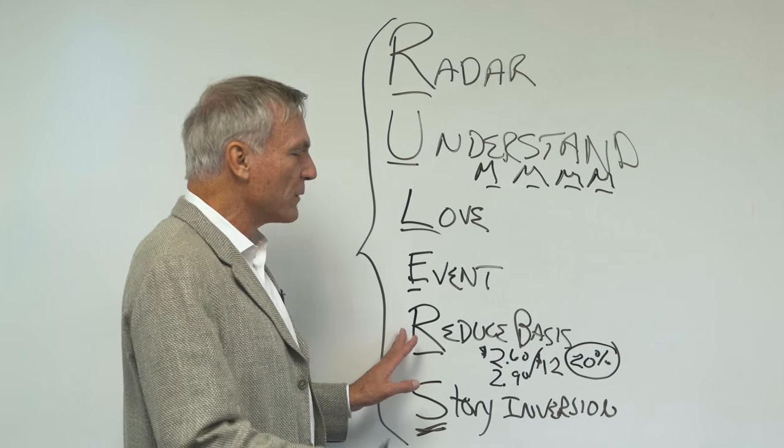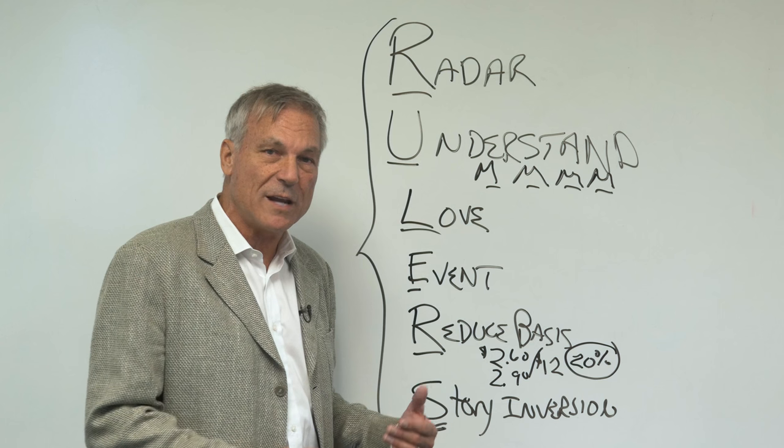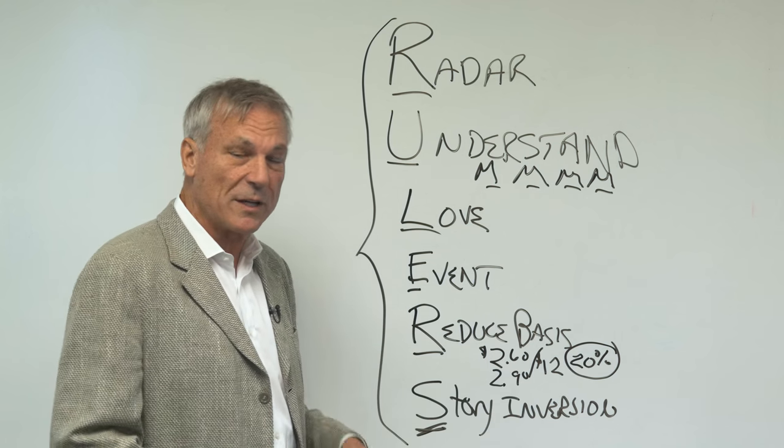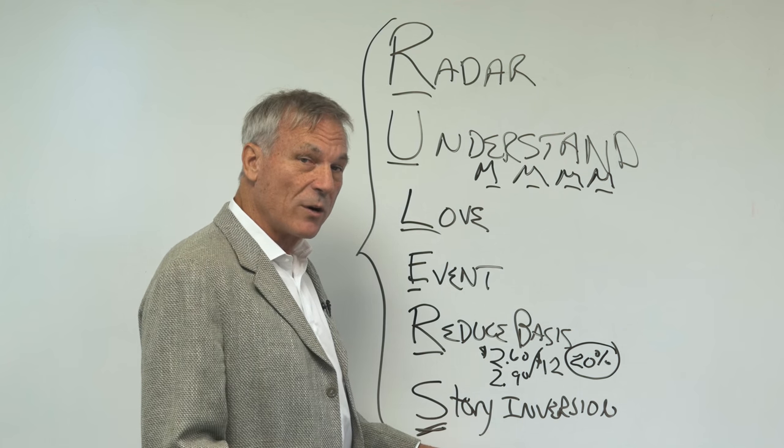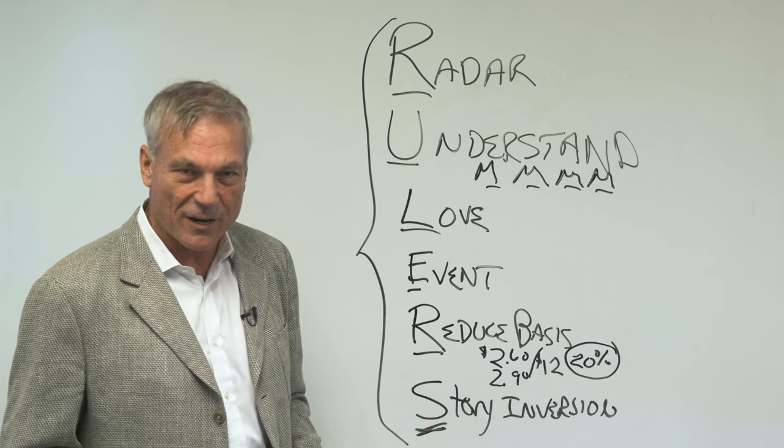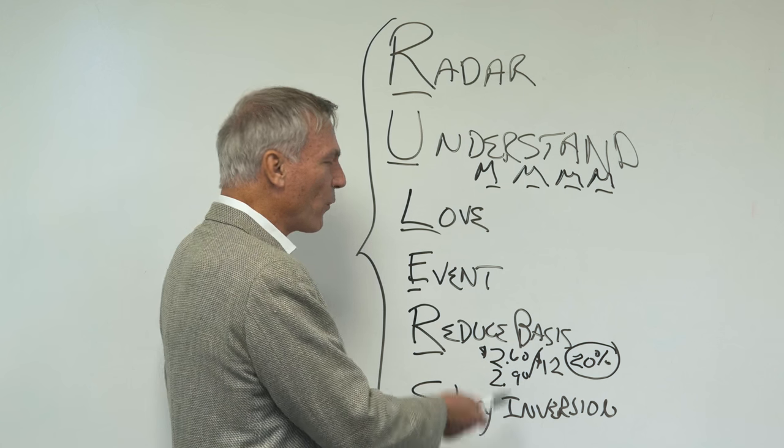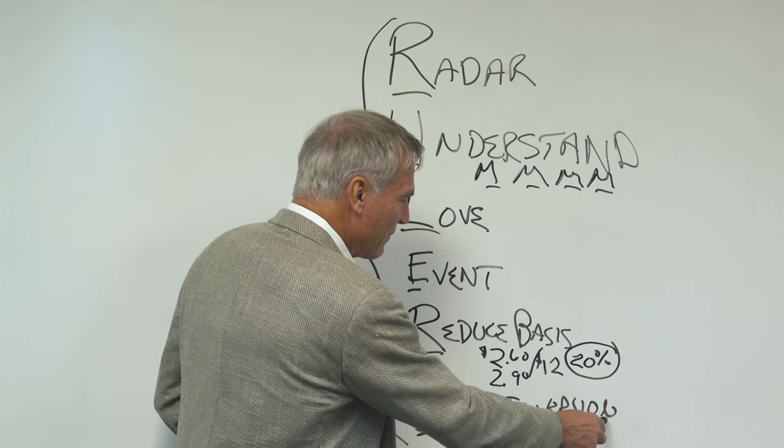Finally, how am I gonna reduce basis and get this thing producing cash flow that's running up to 20% in the next five or ten years? And then finally, and most important in this story is what Charlie Munger taught us. And that is, before you finish your story, invert it.